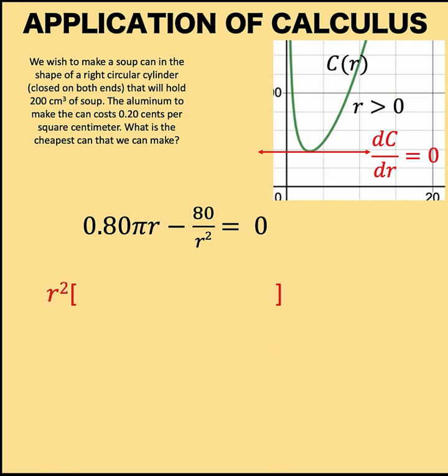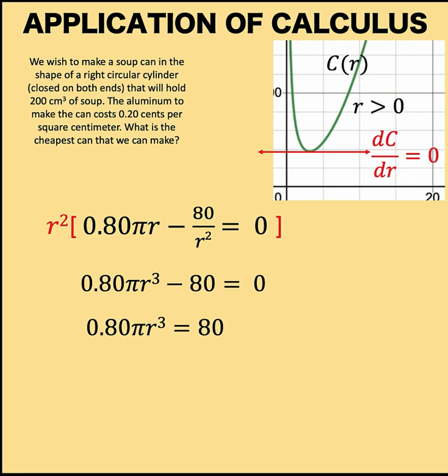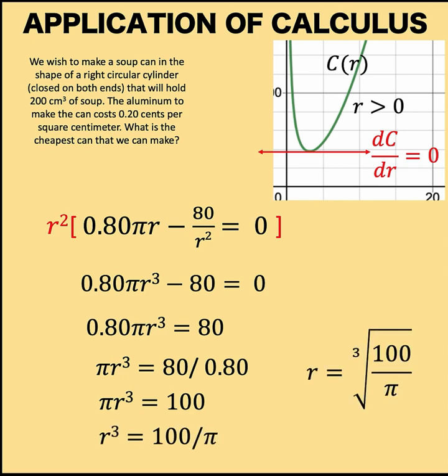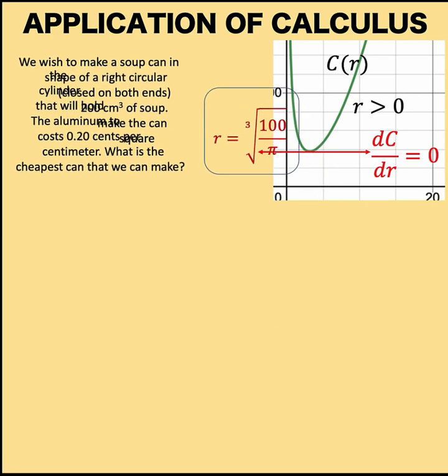Let's multiply both sides of the equation by r² to eliminate the denominator, add 80 to both sides, and divide both sides by 0.80 to get πr³ equals 100. Then divide both sides by π and take the cube root to get r equals the cube root of 100 over π. This is the value of r that gives us the minimum value for the cost function.